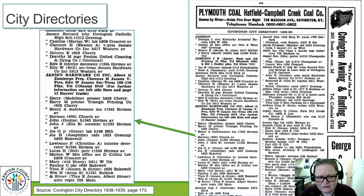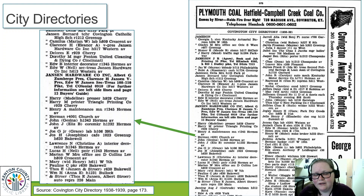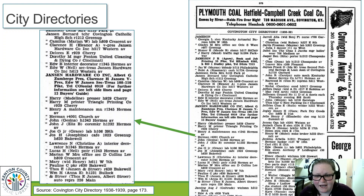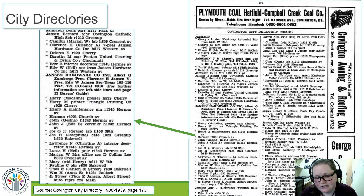City directories also really help you with that frustrating 1890s gap. If your ancestors lived in town and there's a city directory, take advantage of those directories from between 1880 and 1900 that are available.